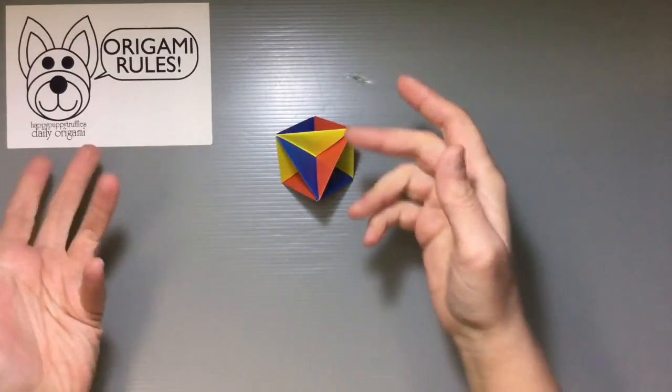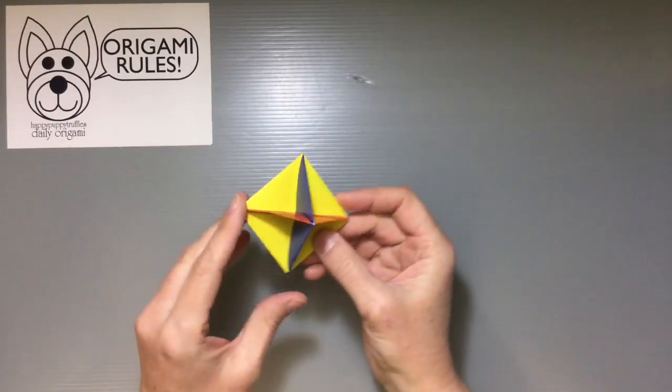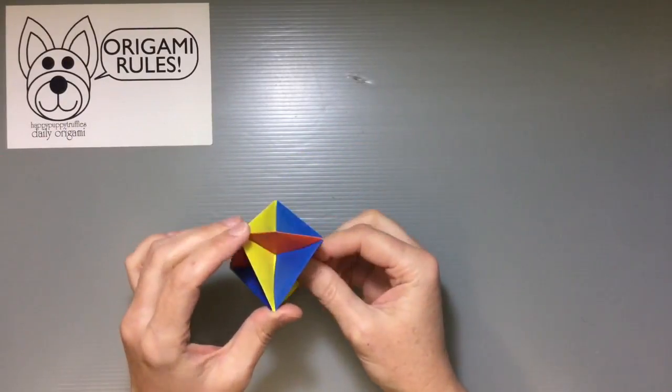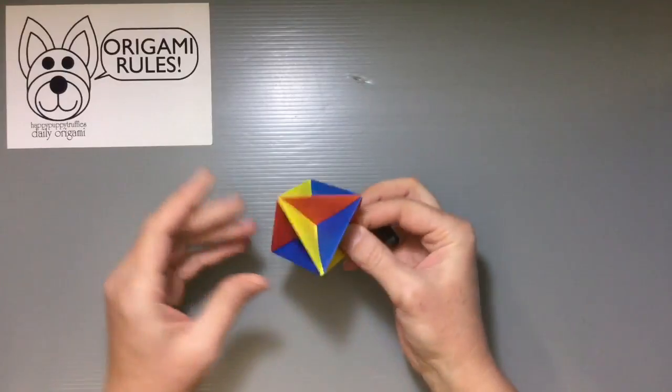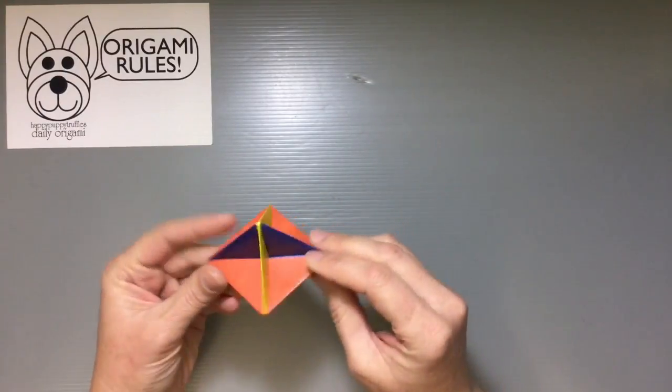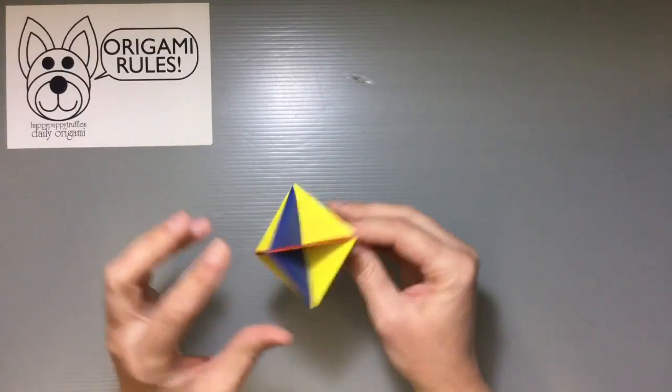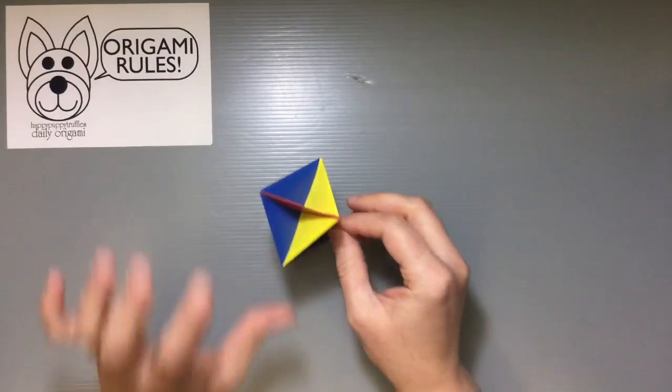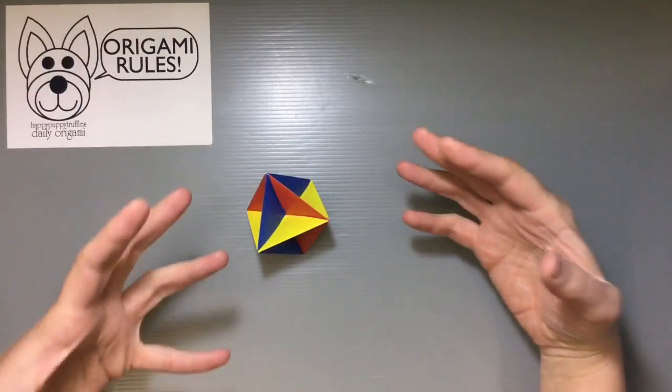But then you can spin it around like a top. And it's just really pretty. And I think it also makes a really cute Christmas decoration. If you want to use it for that. You just string a little bit of string through there. And then you have your own Christmas decorations too. So a really fun modular introduction kind of to modular origami.